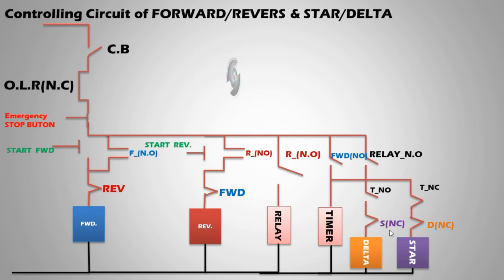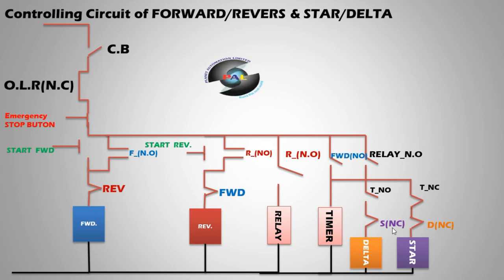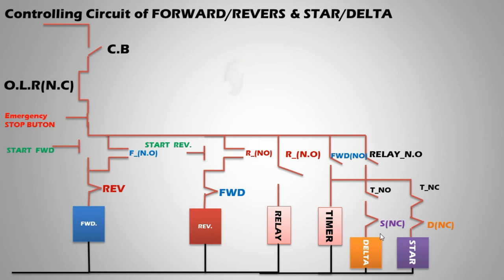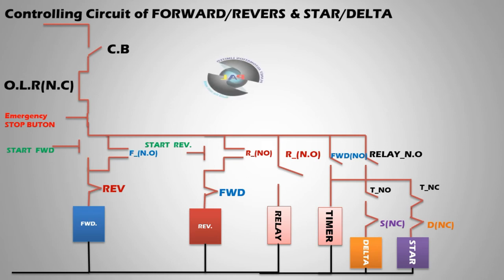This is the step-by-step processing for maintaining forward and reverse with star-delta controlling system. I hope you guys understand what the controlling system is, what the controlling circuit is, and what processing is going on in the circuit. I will show this practically in the next video tutorial.